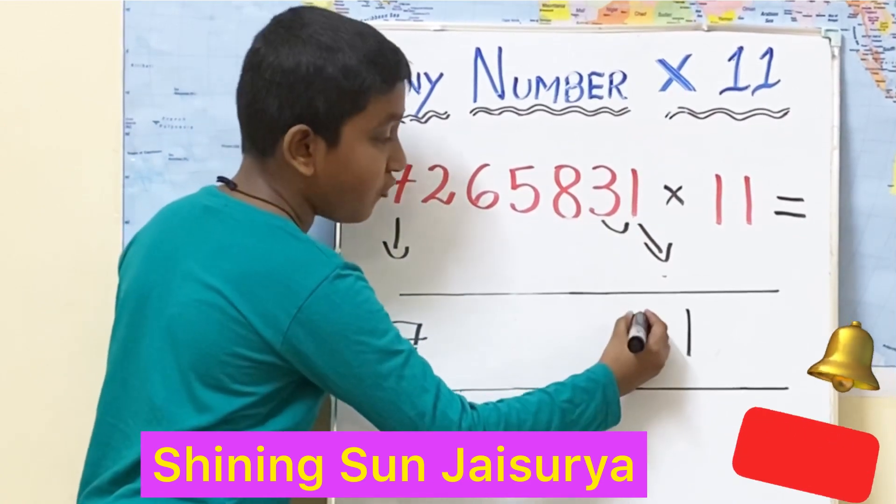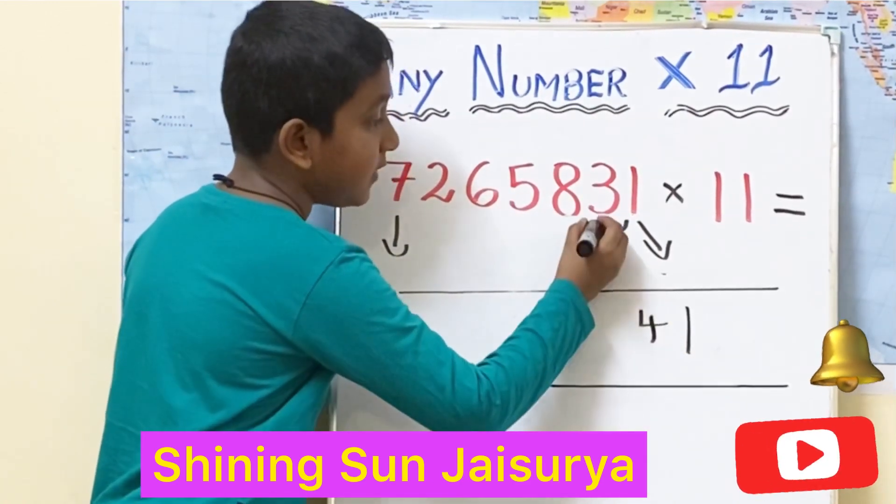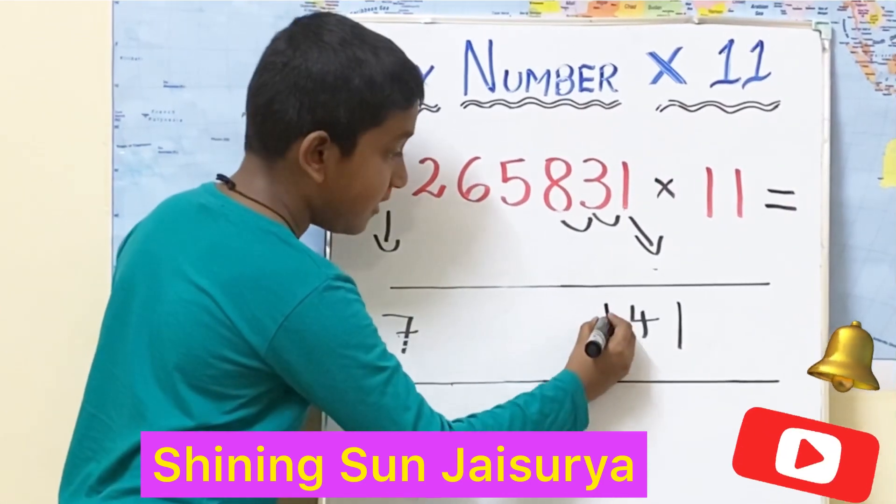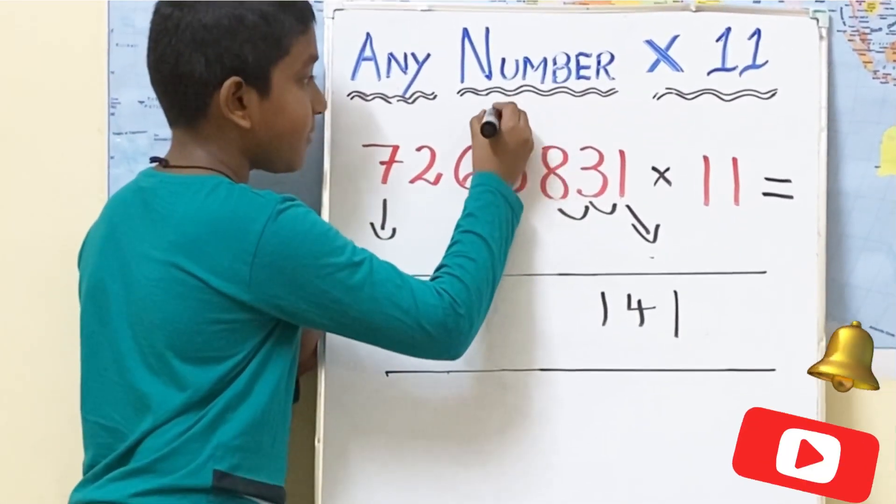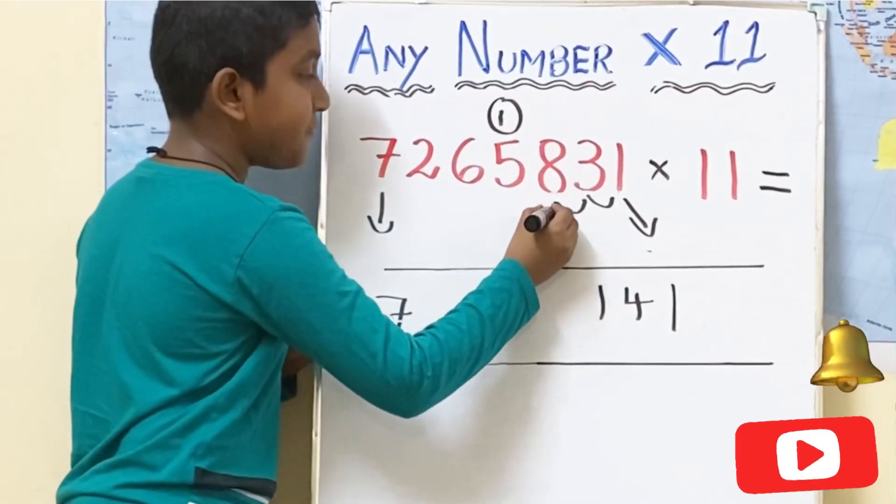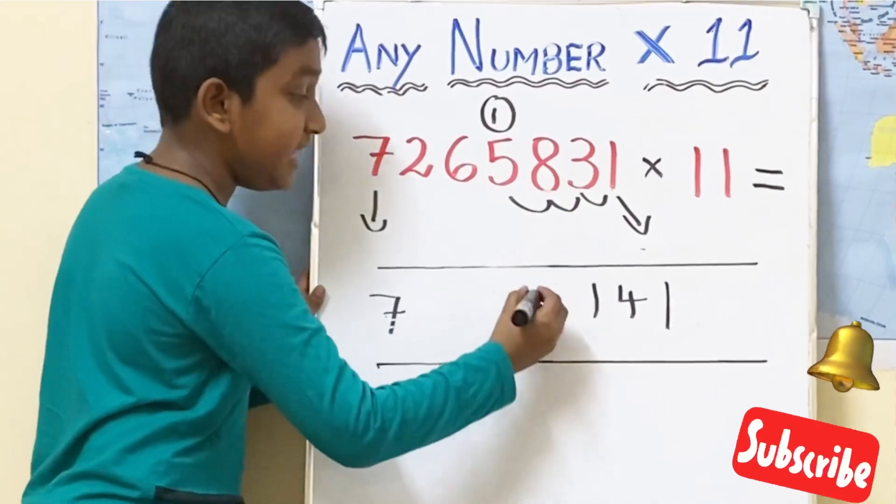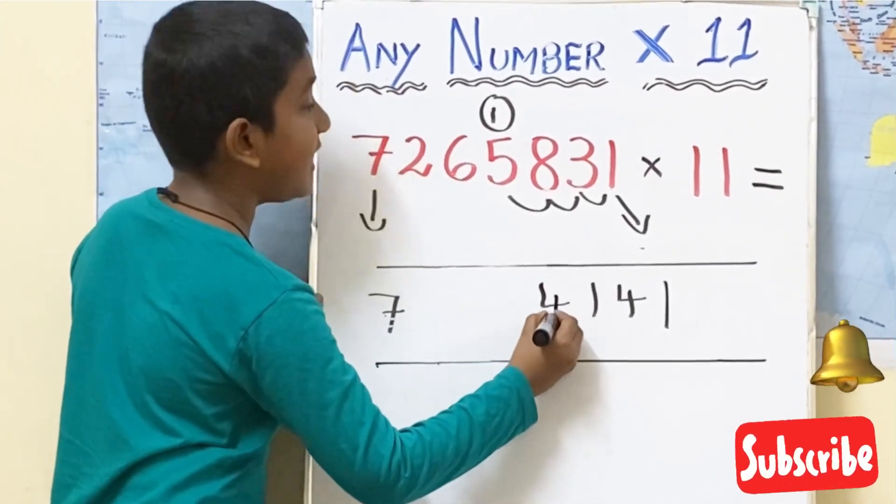1 plus 3 is equal to 4. 3 plus 8 is equal to 11. Let's write the 1 here and carry over 1 up. 8 plus 5 is equal to 13. 13 plus 1, 14. Write 4 here and carry over 1.